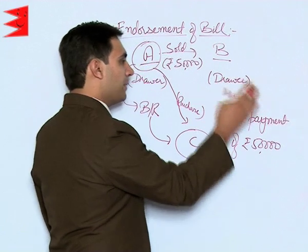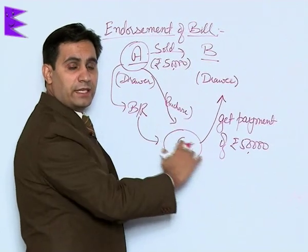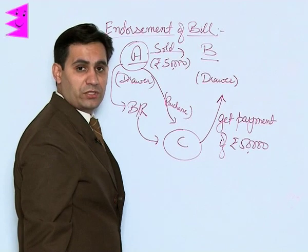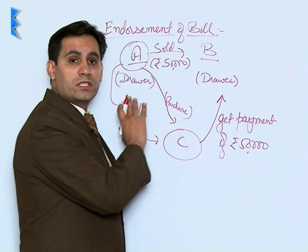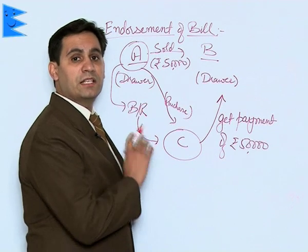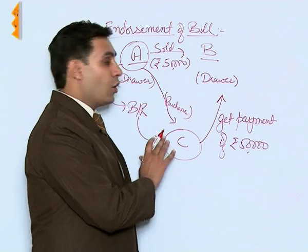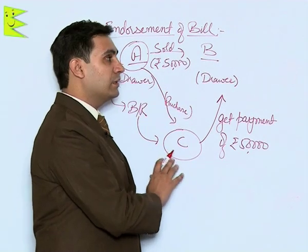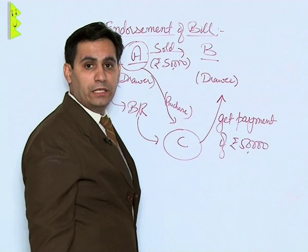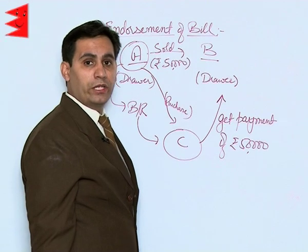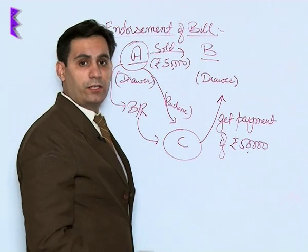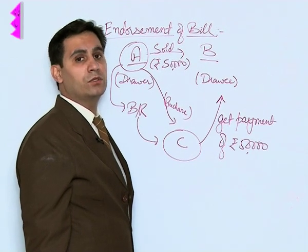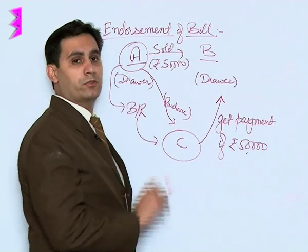Once this payment is received, all the liabilities in these mutually dependent transactions would be extinguished. So in this case, A was the holder of the bill. He transferred that bill to C on account of the payment that he had to make to C, and C in turn gets the payment from B who was the original drawee. So this is considered as the concept of endorsement — the holder of the bill transfers the bill to a third party for any payment that he has to make.